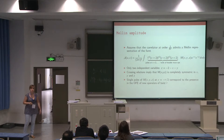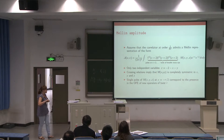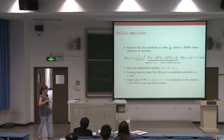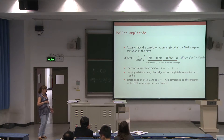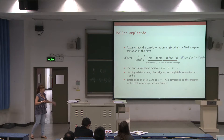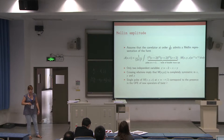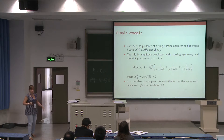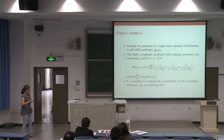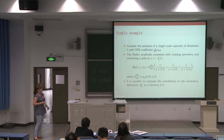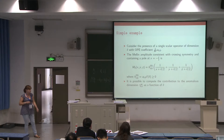Crossing relations imply that the Mellin amplitude is completely symmetric in x, y, and z. Single poles of the Mellin at x = -τ/2 correspond to the presence in the OPE of operators of twist τ. As soon as we have a pole of the Mellin, we know that we have a new operator with that specific twist. Let's consider the simplest example: a single scalar operator of dimension delta, with OPE coefficient going like 1/N² with some three-point function. To have this exchange, we need a pole exactly at -delta/2, which is twist/2.